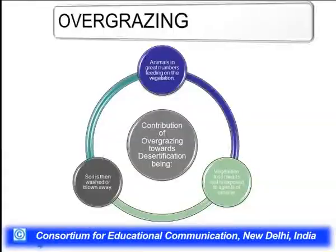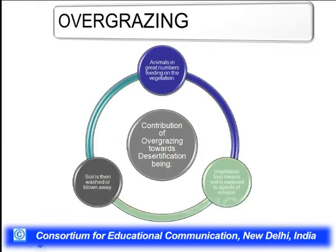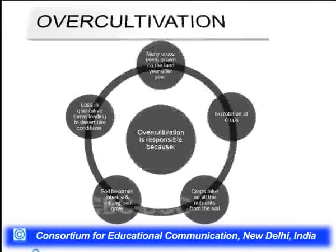Overgrazing is a serious problem because grazing area is declining while grazing animals are increasing. Large numbers of animals feeding on vegetation leads to vegetation loss, exposing soil to agents of erosion — the soil is then washed away and blown away by very high winds. Overgrazing is a particularly big problem in the Indian desert region, specifically in western Rajasthan.